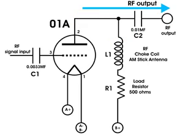This is another way to look at the RF as it travels through C2 to the RF output. Okay, here's the circuit I came up with.